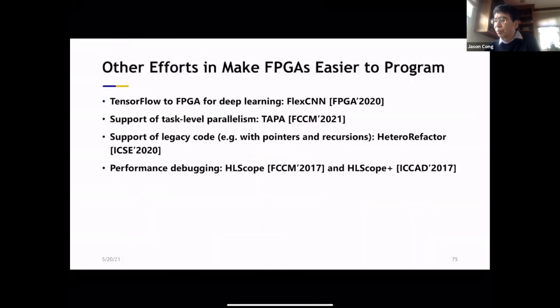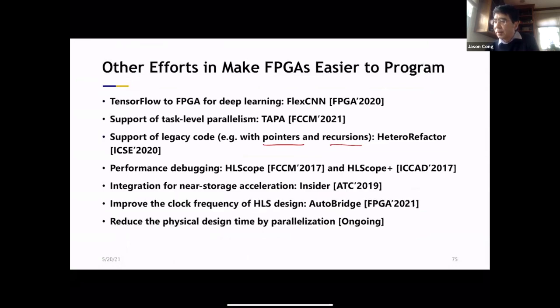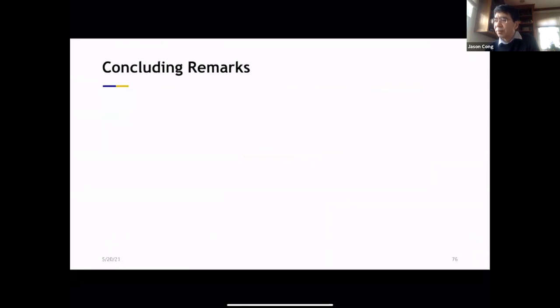And so we have some detailed examples to show you how that's being done. And then now we actually have the backend to go to Merlin and also AutoSA and then the SODA for the compiler part. So these are some of the results. So there's other effort. We make FPGA easier, for example, to have a complete compilation flow from TensorFlow to FPGAs, to do task level parallelization, to support legacy code with pointers and recursion and also performance debugging.